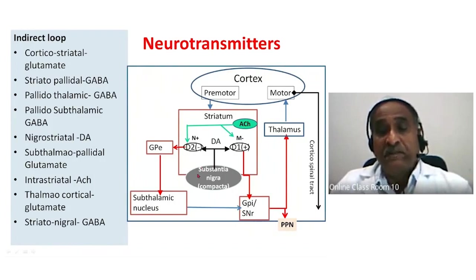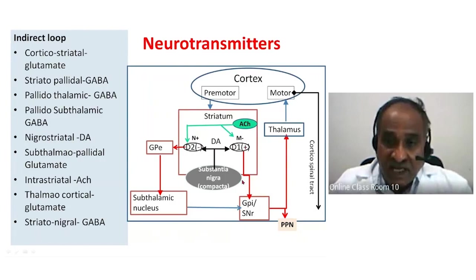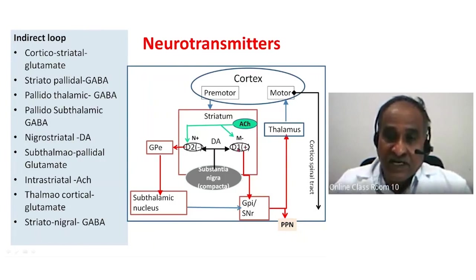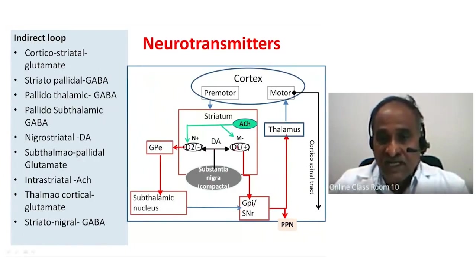What happens to the pars compacta? It refines the direct circuit or indirect circuit activity — that means it modulates hyperkinetic or hypokinetic motion. The nigrostriatal tract secretes dopamine.